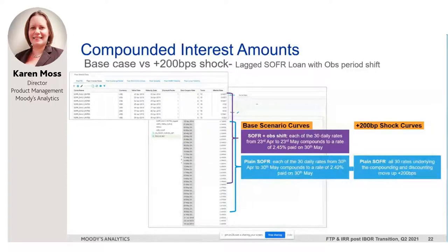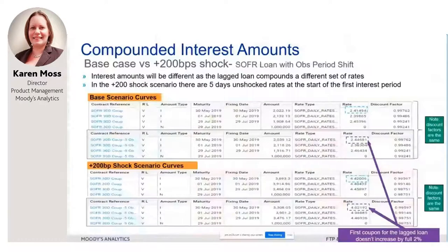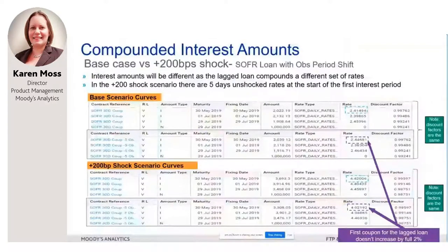For completeness, looking at the exported results from both the lag loan and the plain loan — we've got slightly different coupon rates for the lag loan. That first coupon rate in the shock scenario: whereas for the plain loan it was moving up a full two percent, for the lagged loan it's not moving up that full two percent. The discount factors being applied to the two loans are the same because they're both using that term SOFR curve for discounting.